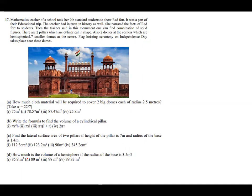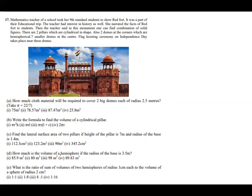Part d: How much is the volume of the hemisphere if the radius of the base is 3.5 meter? Options are 85.9, 80, 98 meter cube, and 89.83 meter cube. And last part e: What is the ratio of the volume of two hemispheres of radius 1 centimeter to the volume of a sphere of radius 2 centimeter? Options are 1 is to 1, 1 is to 8, 8 is to 1, and 1 is to 60.